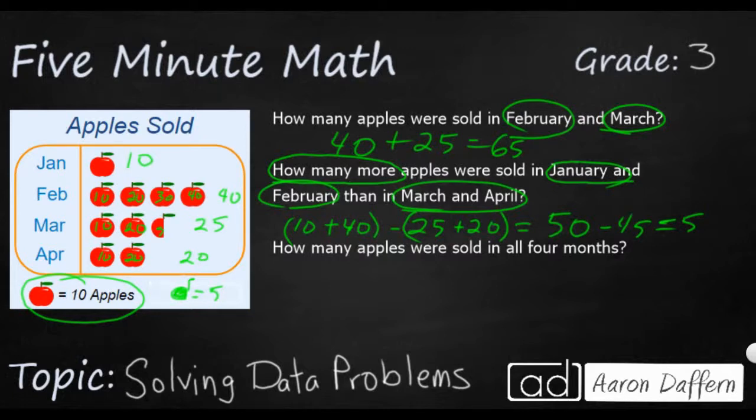Then how many apples were sold in all four months? Well, that's just going to be 10. I'll do this vertically. 40, 25, 20. So my answer is going to be five. Let's see, 595. So it looks like I've got 95.